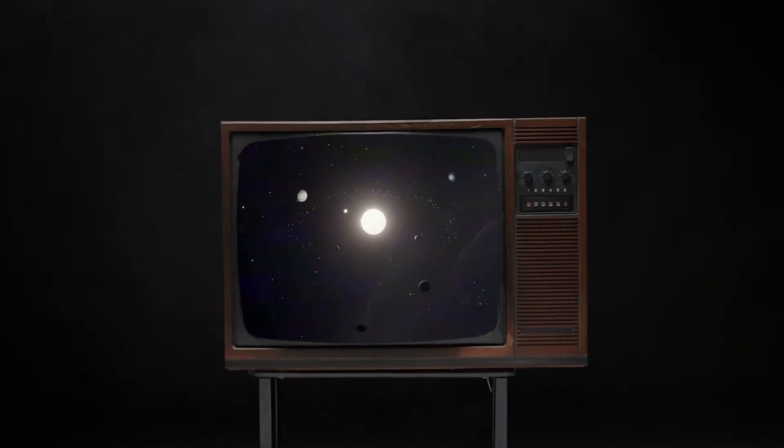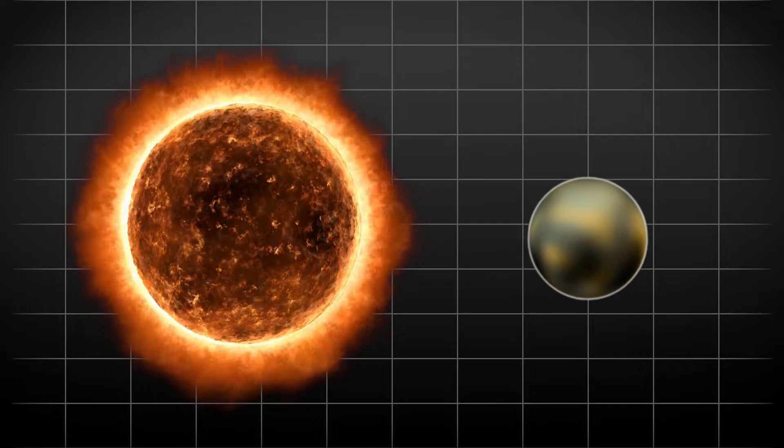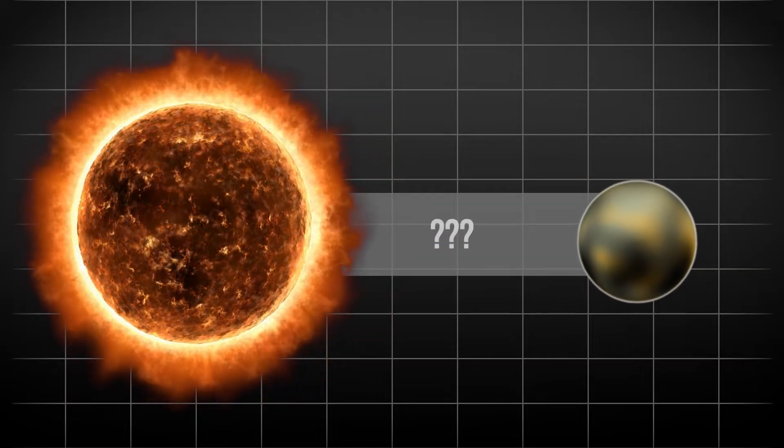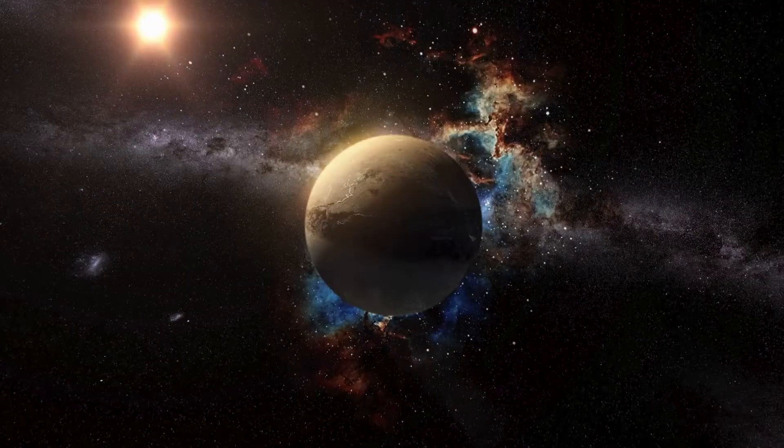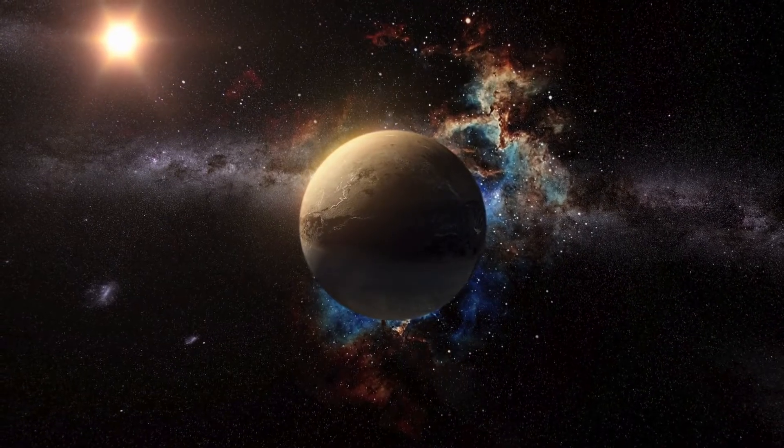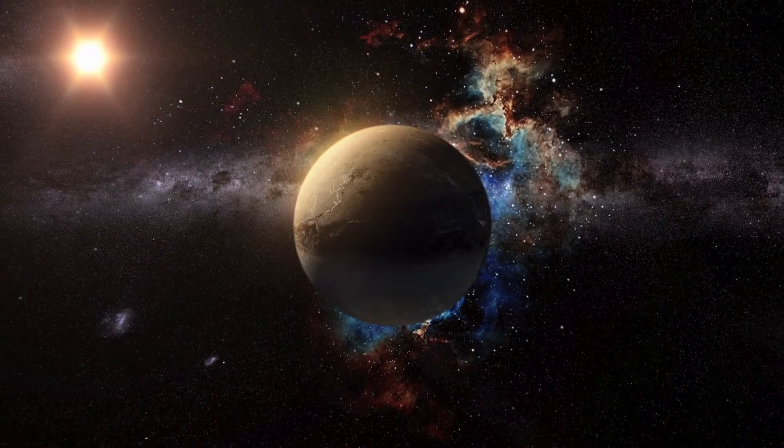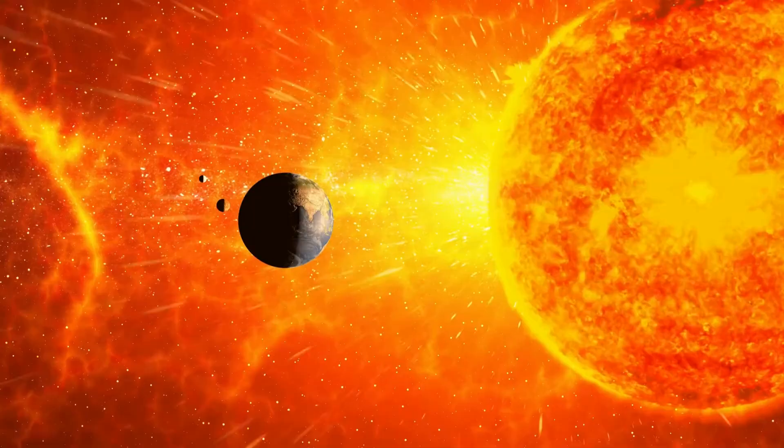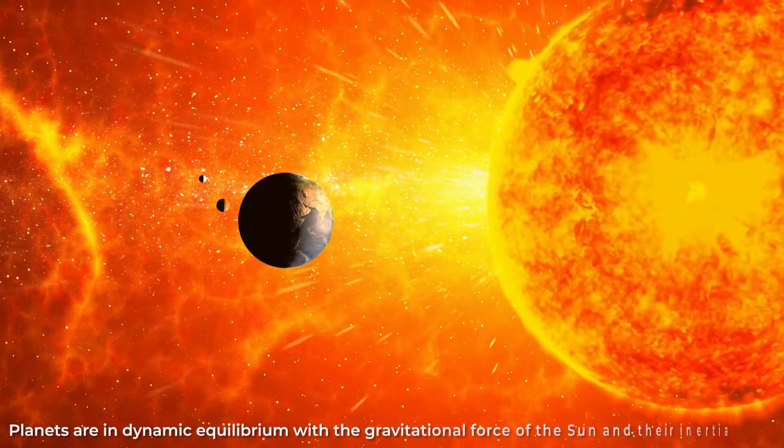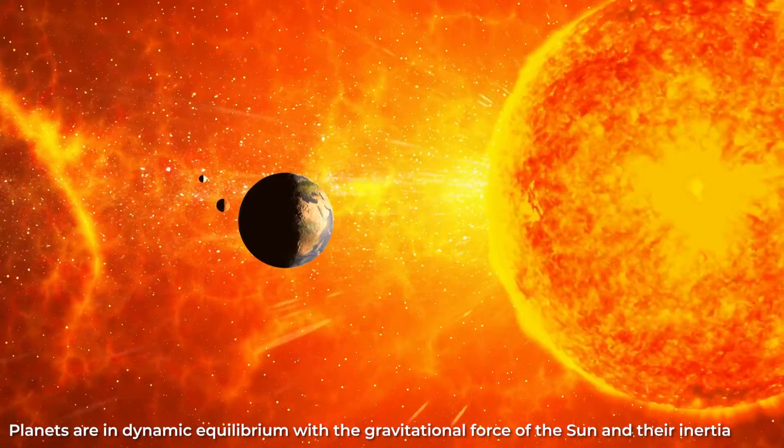The speed at which the planets move in their orbits is sufficient to counteract the gravitational force of the Sun. This speed is known as the orbital speed and is determined by the planet's distance from the Sun and by the mass of the Sun. As the planet moves in its orbit, the gravitational force of the Sun changes its direction, but not its magnitude, and the planet continues to move in its elliptical orbit. It's important to note that the planets are in dynamic equilibrium with the gravitational force of the Sun and their inertia.